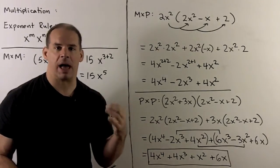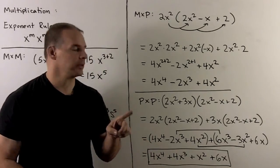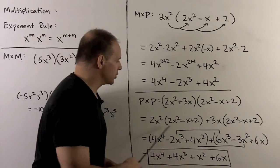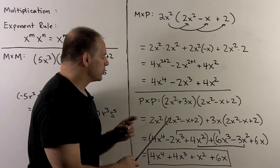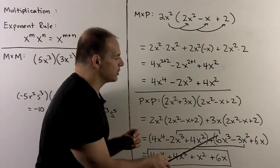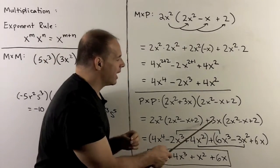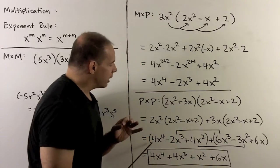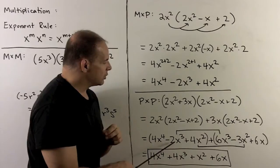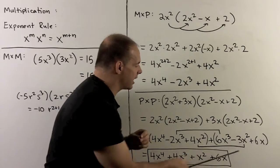Next step: polynomial times polynomial. We take the first polynomial and break it up into monomial times polynomial. So we take 2x squared multiplied by our second polynomial, added to 3x times our second polynomial. Applying monomial times polynomial for the 3x term: 3x times 2x squared gives 6x cubed, 3x times minus x gives minus 3x squared, and 3x times 2 gives 6x. Combining like terms: 4x to the 4th, minus 2x cubed plus 6x cubed gives 4x cubed, 4x squared minus 3x squared gives x squared, and 6x remains.